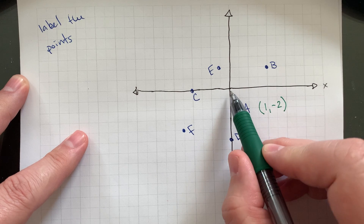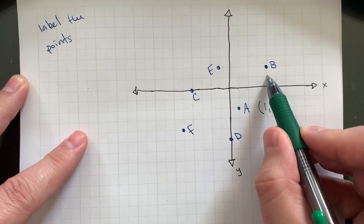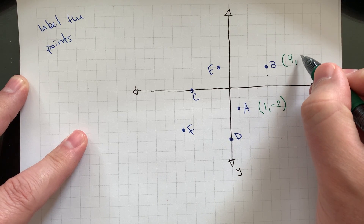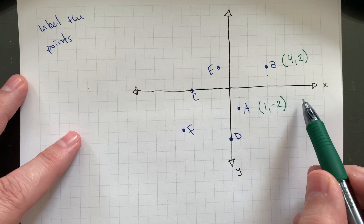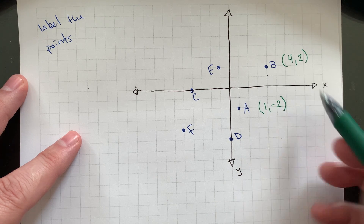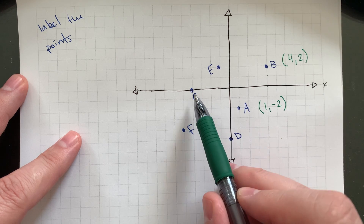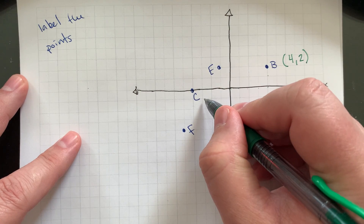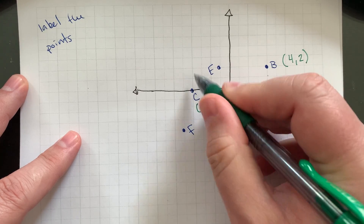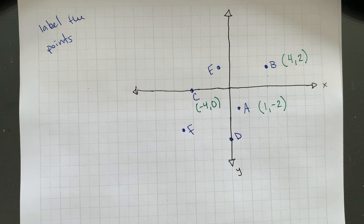Point B is 4 to the right and then up 2, so that's positive 4 for the x and positive 2 for the y. A was in quadrant 4 — positive x and negative y — which is what we've got. B is in quadrant 1, so that's positive and positive. Point C is 1, 2, 3, 4 to the left, so the x value is negative 4, but it's not up or down at all — so that's negative 4 and then zero for the y values. That's actually one of the same points we did in the last graph, just by coincidence.